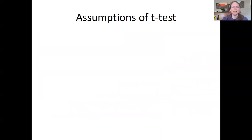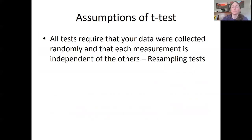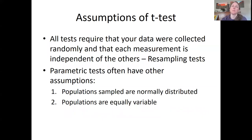So the last thing I'm going to talk about is a t-test, a parametric t-test, has some assumptions. So first of all, all tests, resampling, parametric tests require that your data were collected randomly and that each measurement is independent of the others. So resampling tests have those two assumptions. Now those two assumptions hold for parametric tests as well, but they have two additional assumptions. One is that populations are normally distributed, and two is that populations are equally variable. So let's talk about those two things.